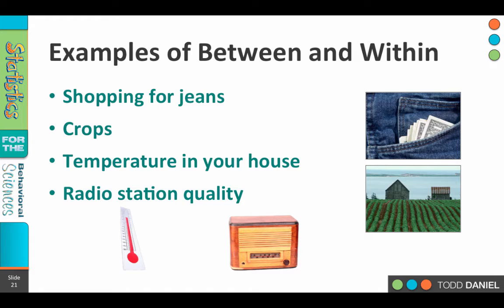A second example would be crops. We have three plots of land: one using fertilizer number one, a second using fertilizer number two, and a control group with no fertilizer. Variance between is the difference in height or yield of the crops from plot one to plot two to plot three — the differences between fertilizer one, fertilizer two, and the control group. But within a plot, is every stalk of corn exactly the same? No. Some are taller, some shorter; some corn got planted near water, some in too much shade. There's always variability within the plot, but typically a greater amount of variability between the three different plots.